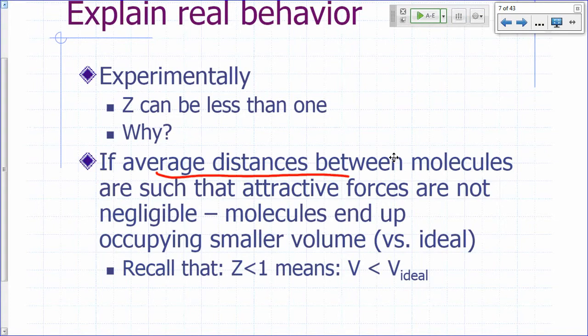Then, if there's attractive forces, that means the molecules will occupy a smaller volume than they would if they were just ignoring each other. So, that would lead to Z being less than one. Your volume is going to be less than ideal.